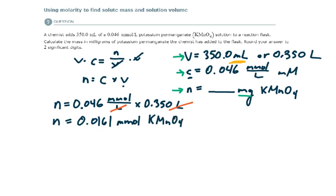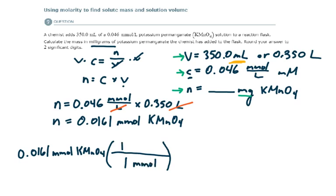So the last thing to do would be to take this amount of potassium permanganate and convert it to milligrams for our final answer. So let's take this many millimoles of potassium permanganate and convert it from millimoles to moles. So that conversion would be 1 millimole is 10 to the minus 3 moles of potassium permanganate.